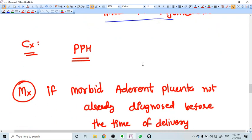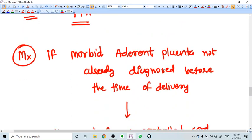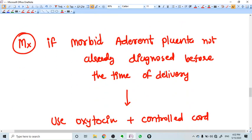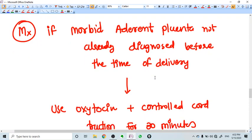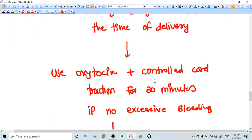What is the complication? The very main complication is postpartum hemorrhage. If the morbid adherent placenta is not already diagnosed before the time of delivery, then first of all we go for the main common reason of retention of placenta.